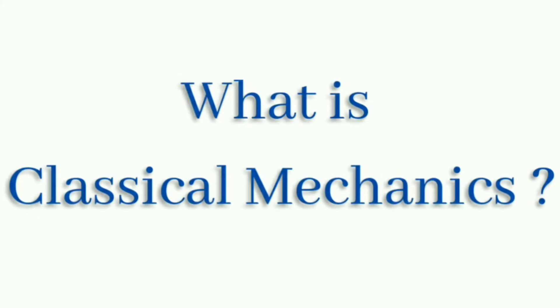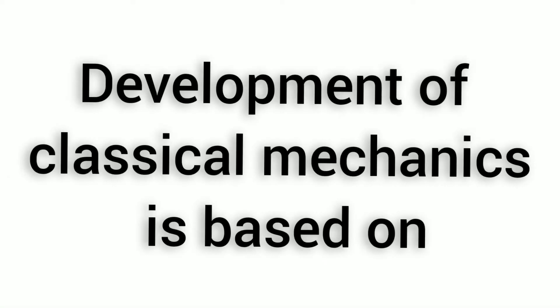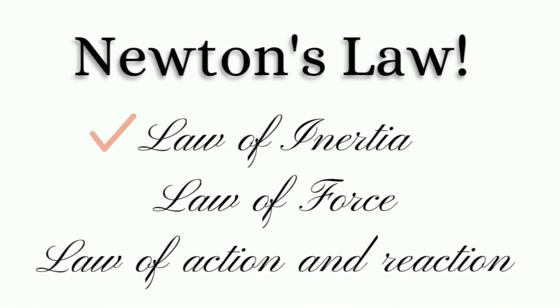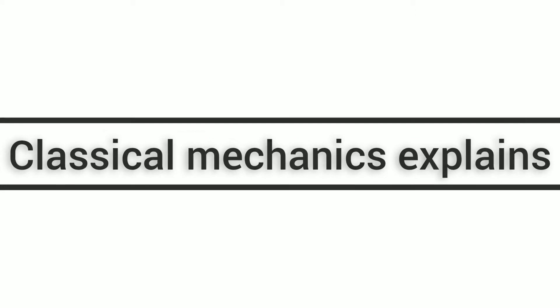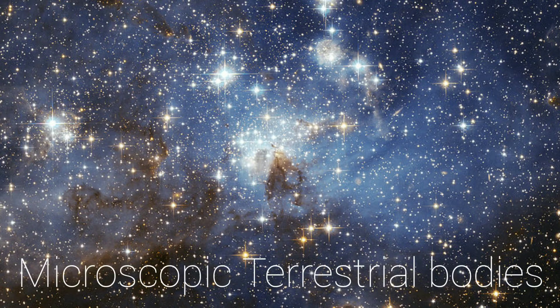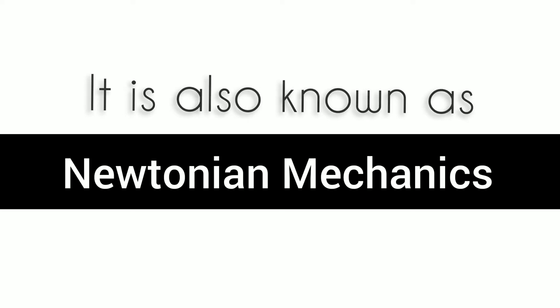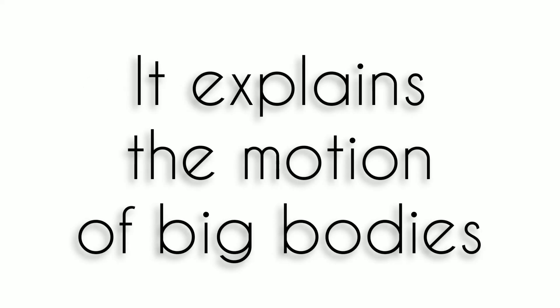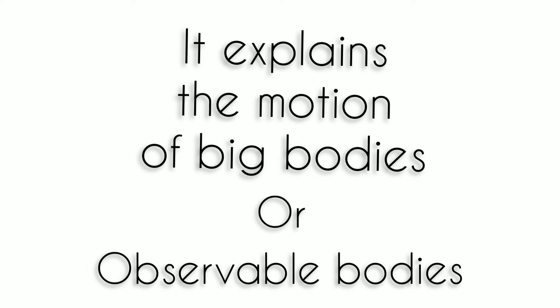The first question arises is what is classical mechanics? The basis of the development of classical mechanics is based on Newton's three laws: law of inertia, law of force, law of action and reaction. Classical mechanics explains correctly the motion of celestial bodies like planets, stars and microscopic terrestrial bodies. It is also known as Newtonian mechanics.